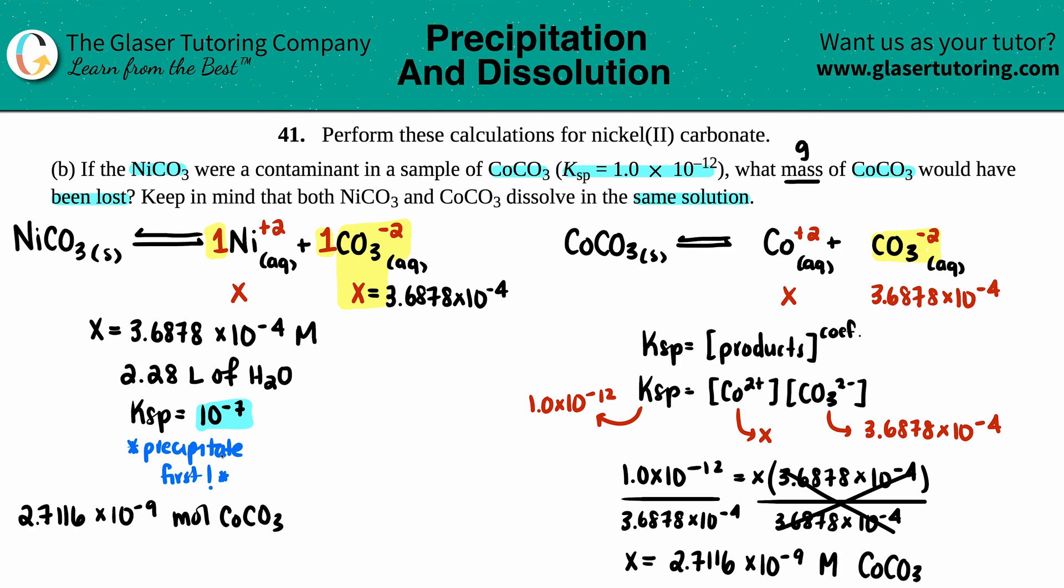Actually, I think there's an easier way. I have 2.7116 times 10 to the negative ninth molarity, and they told us we were in the same solution, so I have the same liters - 2.28 liters from letter a. If I use my molarity formula, molarity equals moles divided by liters. I have molarity and liters, so I can solve for moles. Rearranging: moles equals molarity times liters.